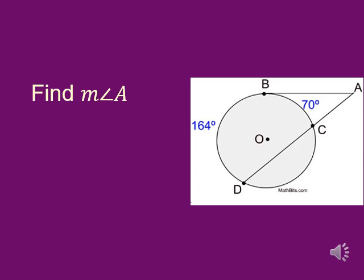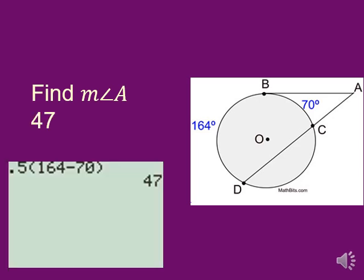And so see if you can figure out what we're going to get for how big angle A is here. And again, the key thing is it's half the difference. I subtract 164 minus 70, and I could either do that and then divide by 2, or I can just do 0.5 times the subtraction.